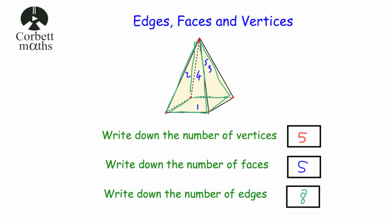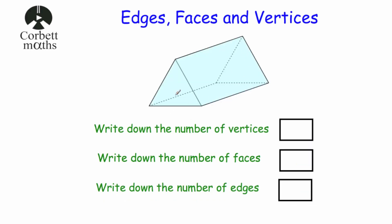And that's it. Okay, let's have a look at our next question. Here we've got a triangular prism — some people like to consider it as a tent. We've been asked to write down the number of vertices, faces, and edges. Starting with vertices: that's one, two, three at the front, and three at the back — four, five, six. So six vertices, six corners.